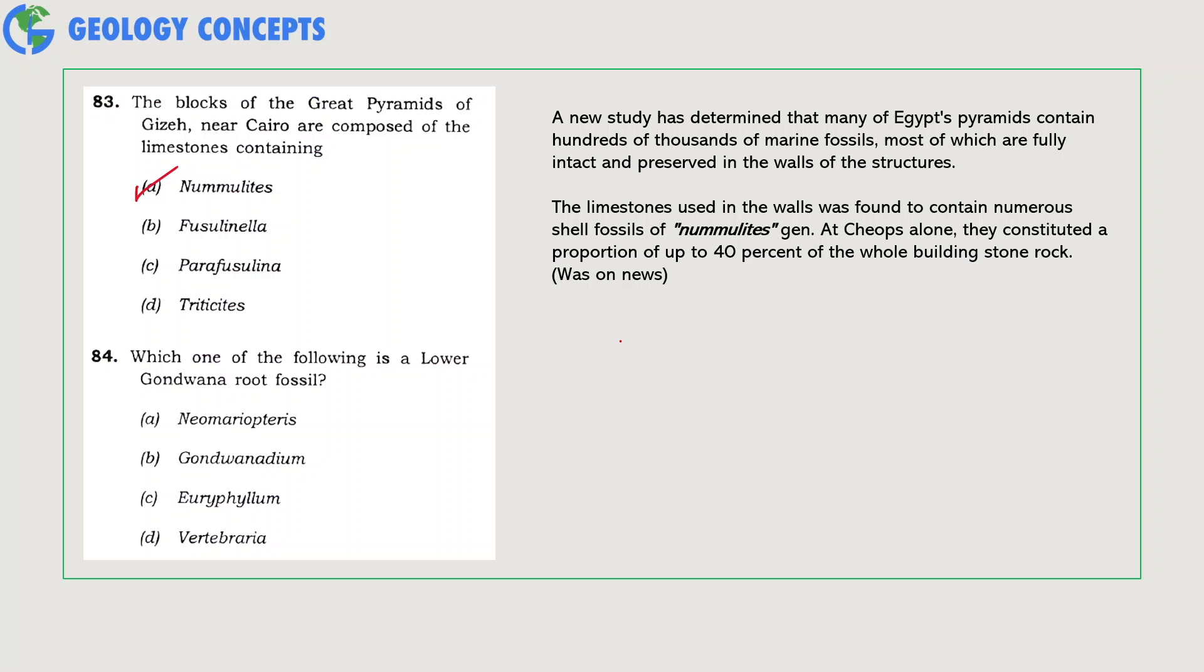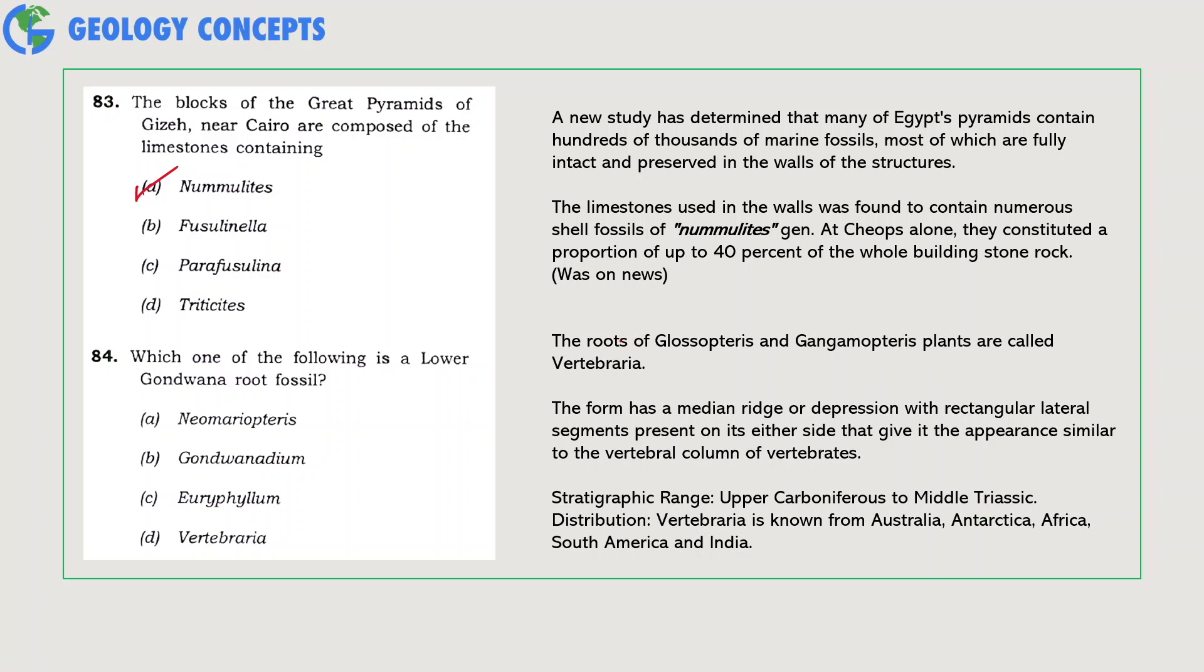Which one of the following is a Lower Gondwana root fossil? The roots of the Glossopteris and Gangamopteris plants are called Vertebraria, and the form has a median ridge or depression with rectangular lateral segments present on either side that gives it an appearance similar to that of vertebral column of vertebrates. Its stratigraphic range is from Upper Carboniferous to Middle Triassic. So option D is the right answer here.